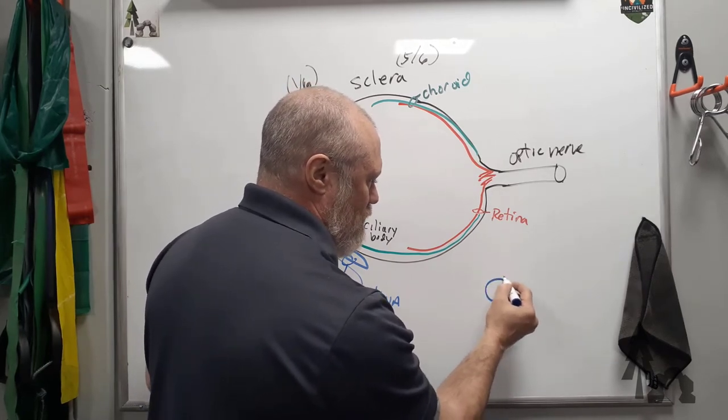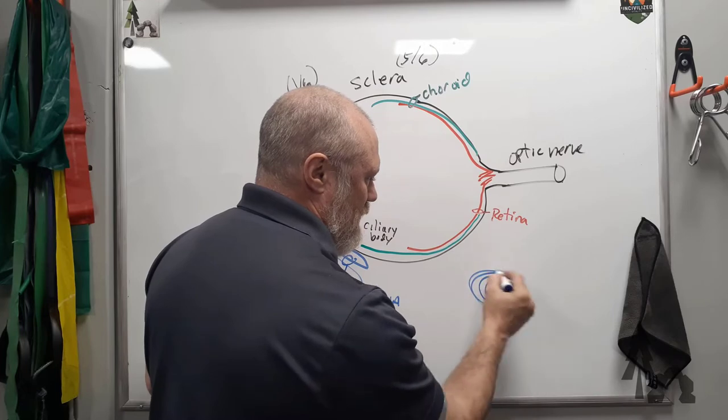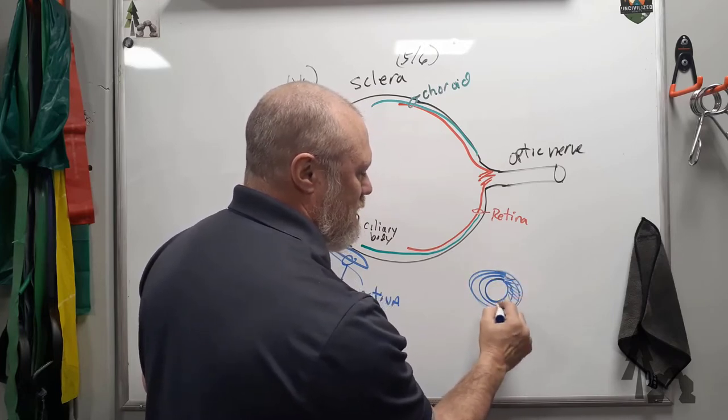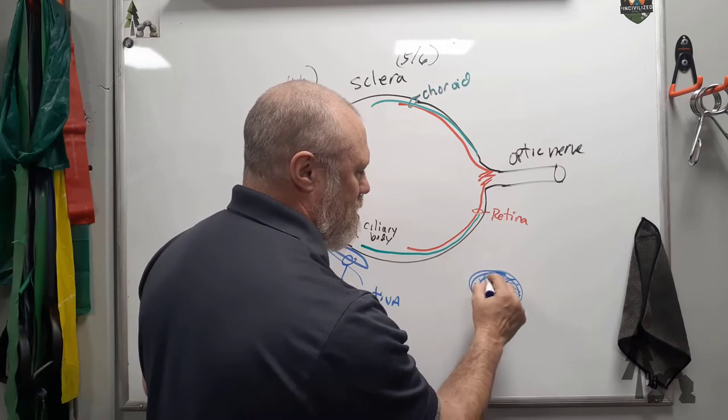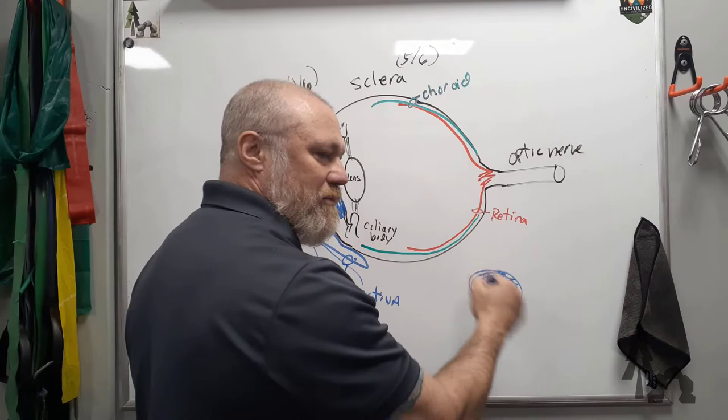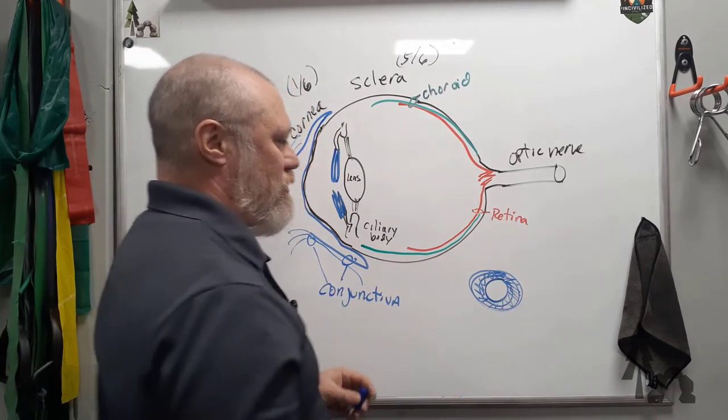And then you've got some circumferential and radial. So some like the spokes of a wheel, and some that kind of run around in concentric circles.